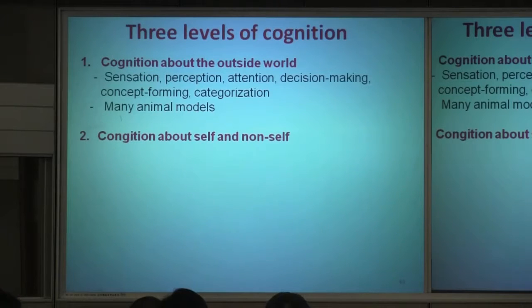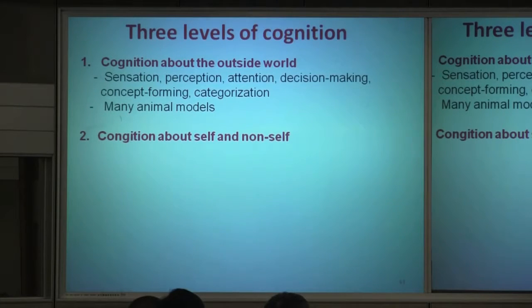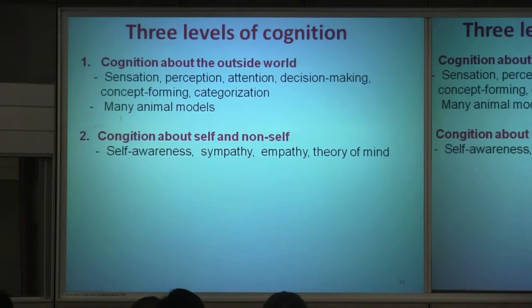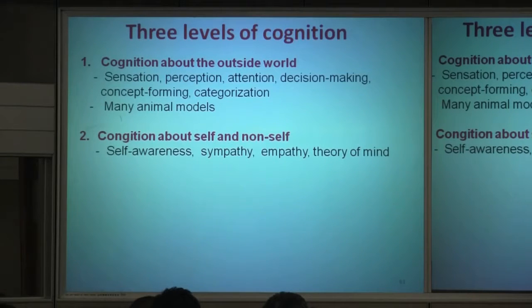There is a cognition about self and non-self — that's more complicated. I know I am here standing; I know you are listening. I have to have the concept of myself and of other people. These concepts include self-awareness, sympathy and empathy — I know what you are thinking about. This is empathy. The theory of mind: I know what you are thinking — theory about your mind, not just my mind, but all minds. All these are important aspects of the concept of self and non-self.